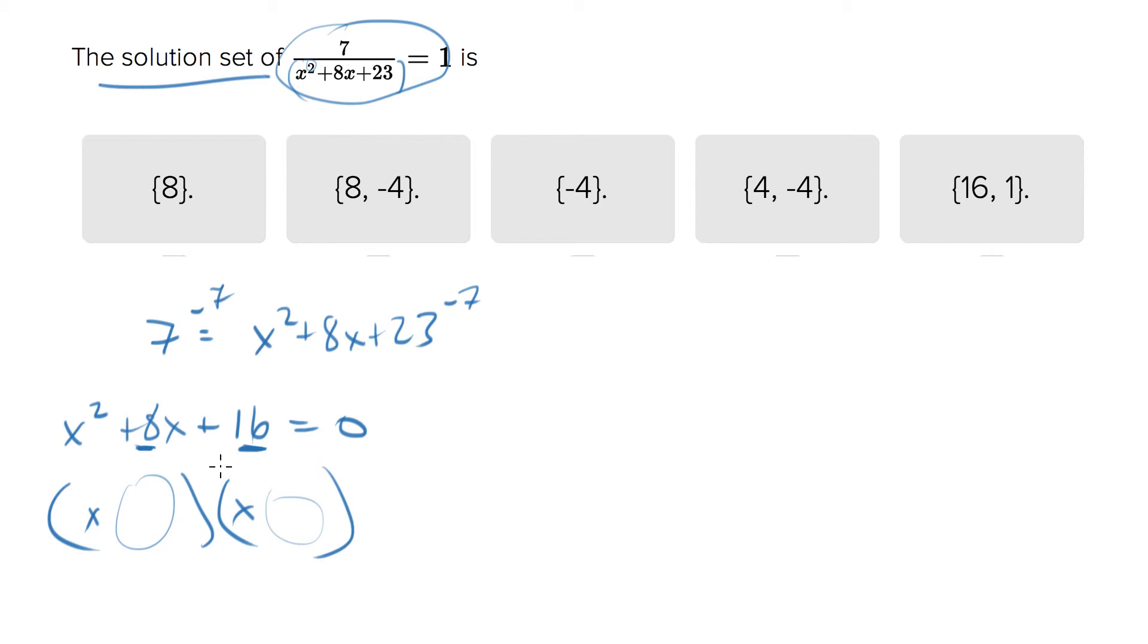So what two numbers multiply to give you 16 and sum to give you 8? How about 4 and 4? x plus 4 and x plus 4.